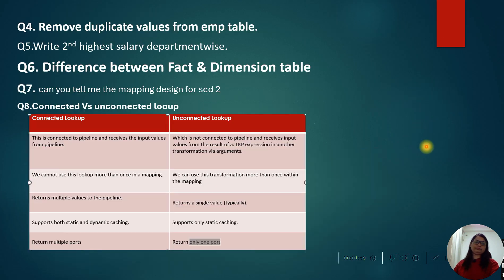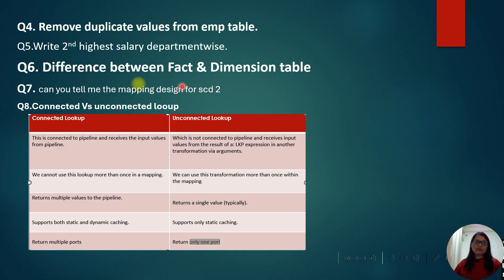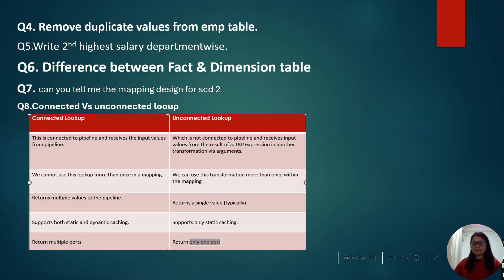The next set of questions — how to remove duplicate values from an employee table, write the second highest salary department-wise, difference between fact and dimension table, and the mapping design for SCD Type 2 — these are all repeated questions that I have already covered in previous parts of the interview question series.